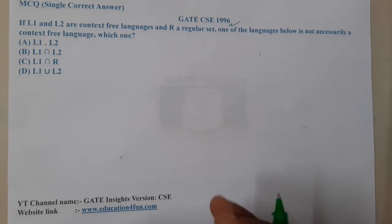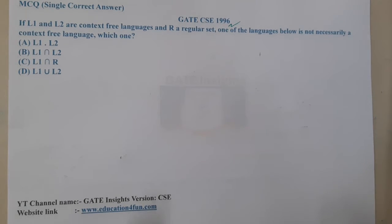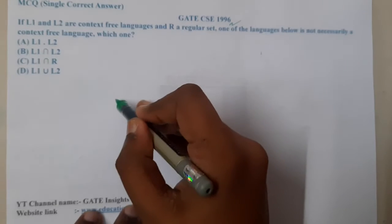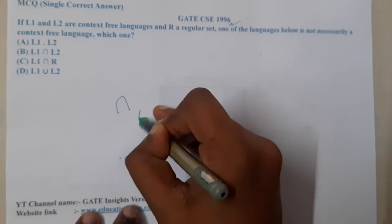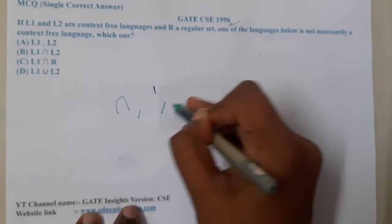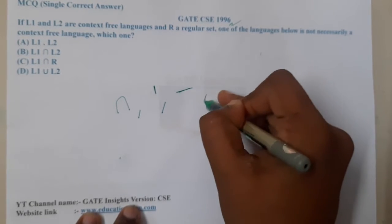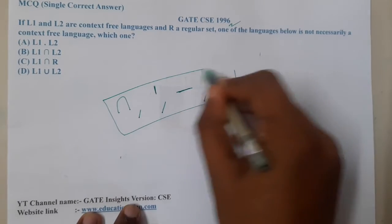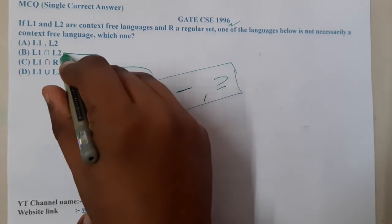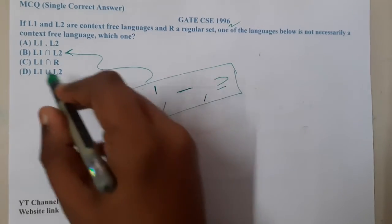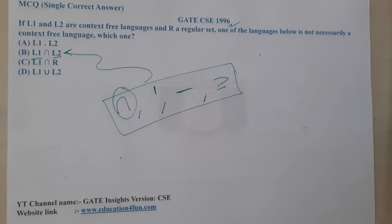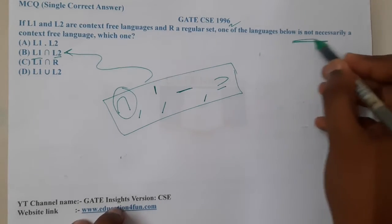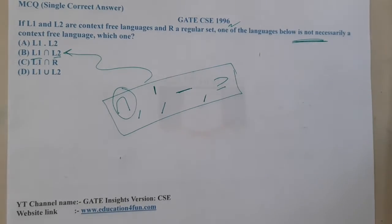Let us recall a few things. When working with context-free languages, it is not closed under intersection, not closed under complement, not closed under set difference, and not closed under subset. If you see option B, it is clearly an intersection between two context-free languages, so it is not necessarily context-free. We have seen this in a table drawn earlier.